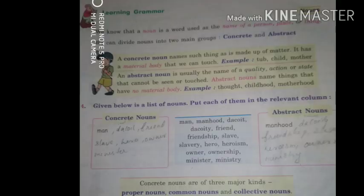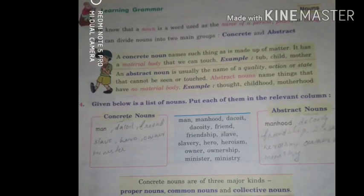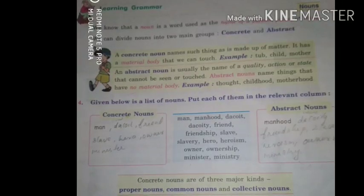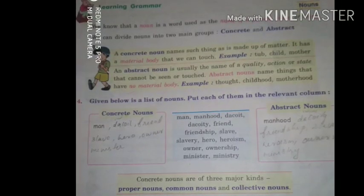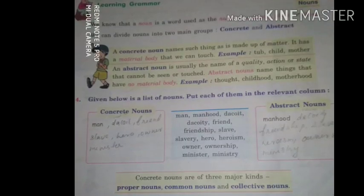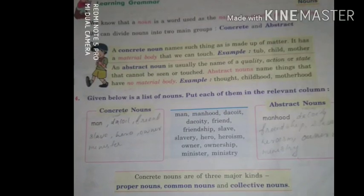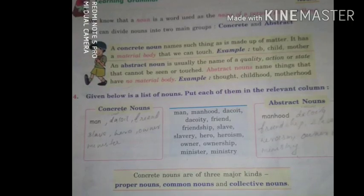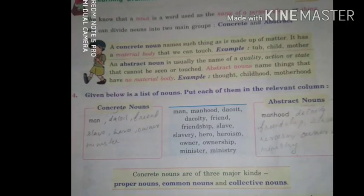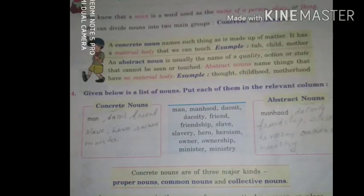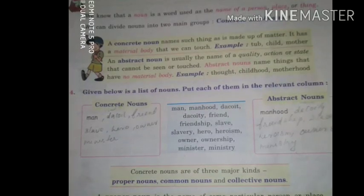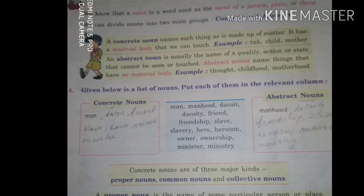Moving on to the Learning Grammar section. We know that a noun is a word used as the name of a person, place, or thing. We can divide nouns into two main groups: concrete and abstract. A concrete noun names something made up of matter — it has a material body that we can touch. Examples: tub, child, mother. All these are concrete nouns because we can touch and sense them.